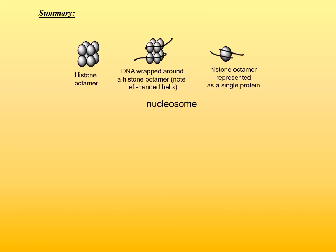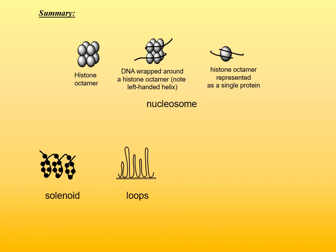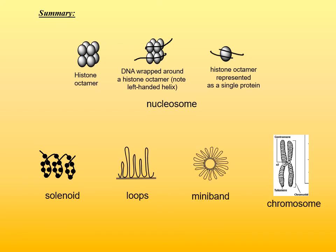Here is a summary of the higher-order tertiary structure of DNA in the order of increasing level of complexity, starting with the nucleosome, then formation of solenoid, loops, miniband, and finally chromosome.